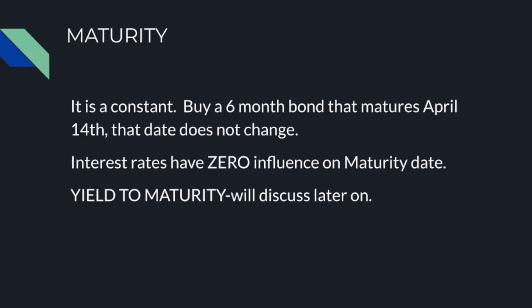Moving on to maturity. Maturity is in fact a constant. So if you buy a six-month bond that matures on April the 14th, that date is not going to change no matter what happens with interest rates. On April the 14th, your bond is done — you're going to get your money back plus all of the interest payments up to that point. Remember that maturity is a constant. Interest rates have zero influence on the maturity date; that date does not change.